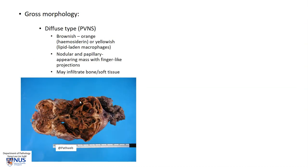In gross appearance in the fresher specimen, the diffuse type of tenosynovial giant cell tumor, or PVNS, often has a brownish or orange appearance, and this is because of a lot of hemosiderin deposition due to hemorrhage. Sometimes it may also appear yellowish because of the presence of lipid-filled macrophages. It has this papillary and sometimes nodular appearance, and as mentioned, it may also infiltrate the bone or soft tissues.